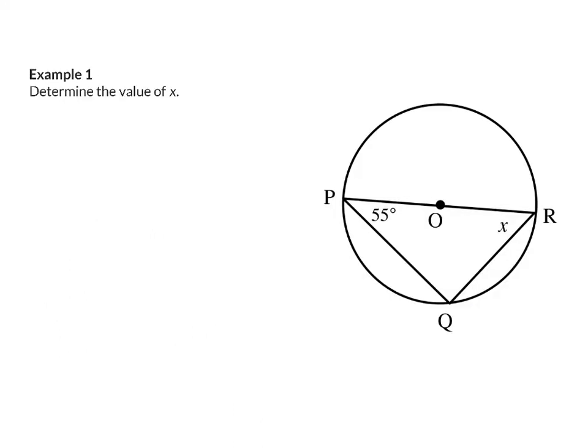Example 1: Determine the value of x. If we look at our picture, you will see that x is an angle in a triangle. In this triangle, we also know the size of angle P, which is 55 degrees. Using our new theorem, Theorem 3, we can say that angle Q will be 90 degrees, because angle Q is subtended by the diameter of this circle, PR. Let's see how we write this down.